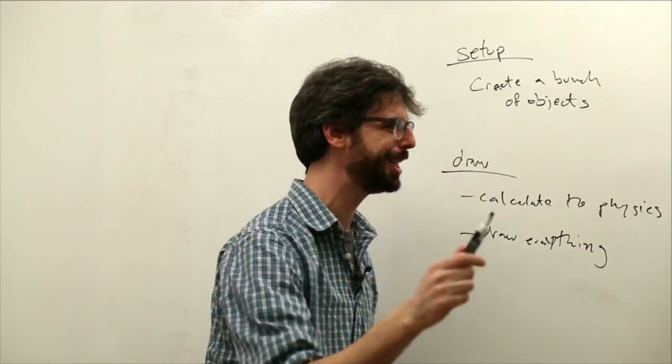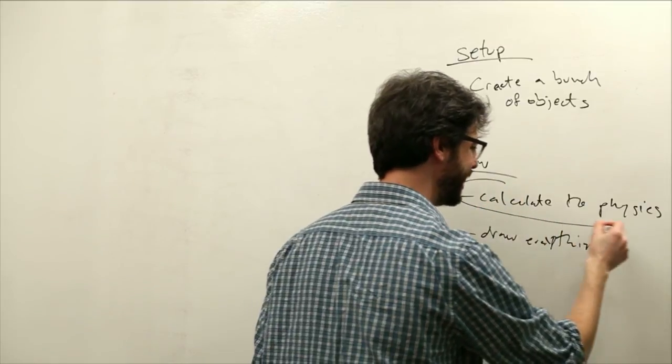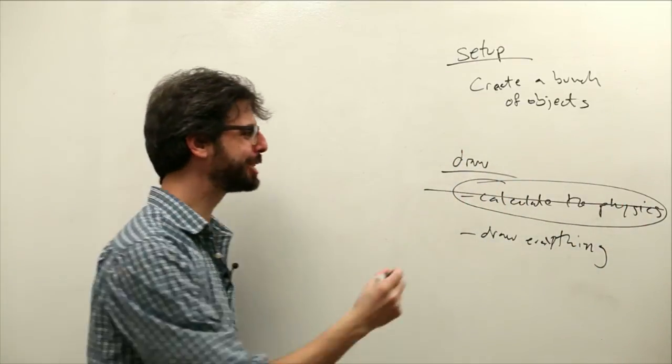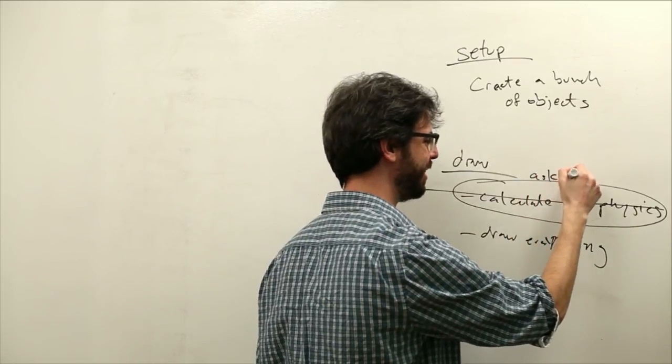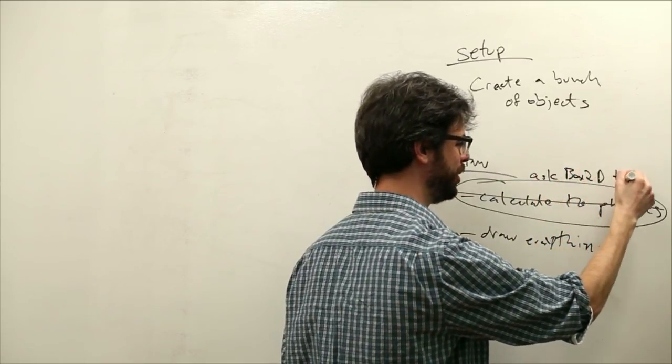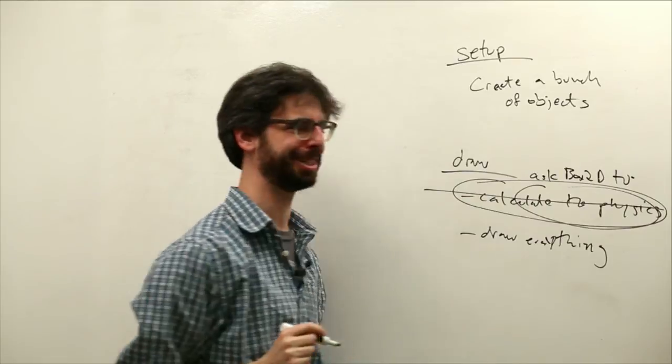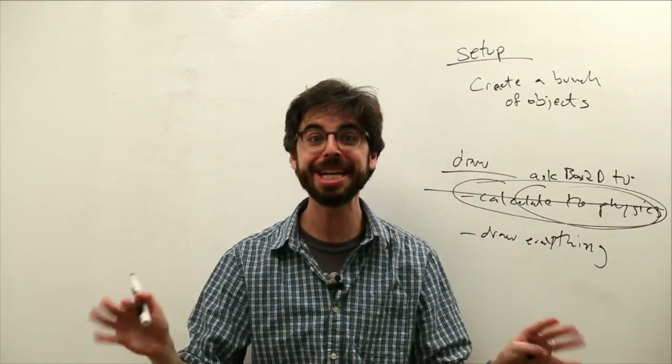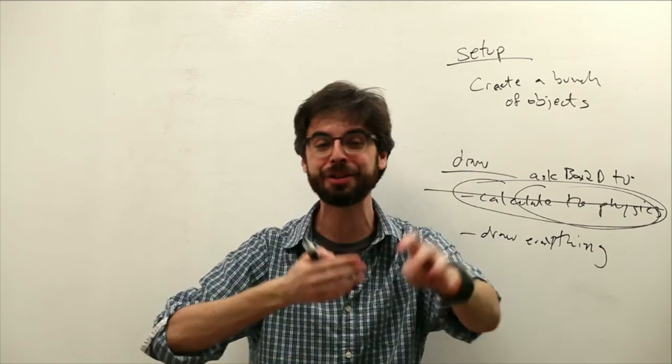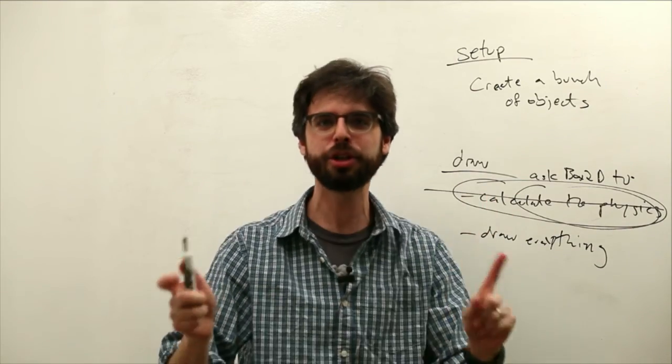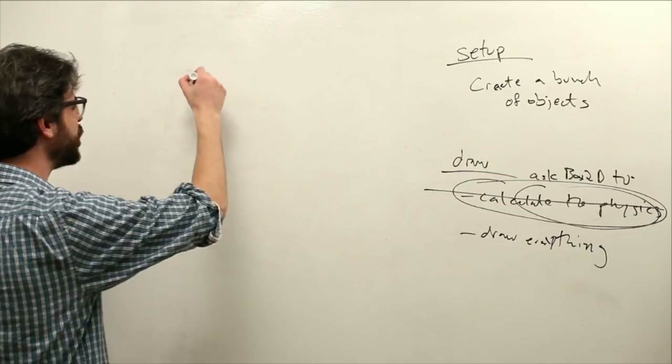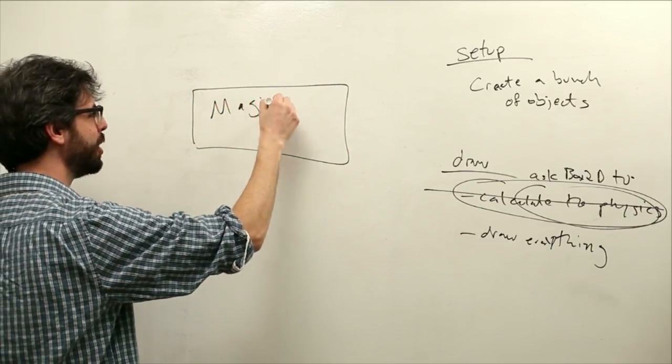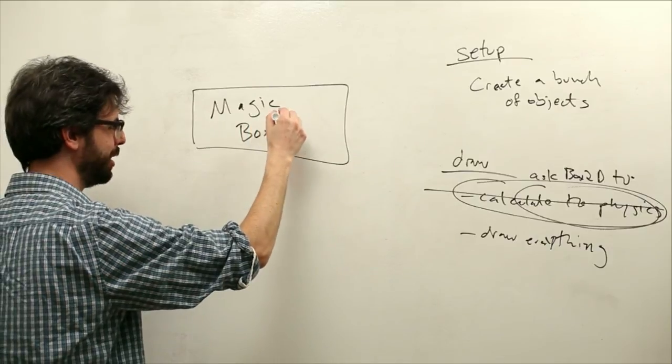What we're looking to do with Box2D is replace this line with ask Box2D to calculate the physics, right? We still need to create everything, and we still need to draw everything. But we don't need to update all of their locations and do all of that math. Box2D is going to do it. We can think of Box2D essentially as this magic box.